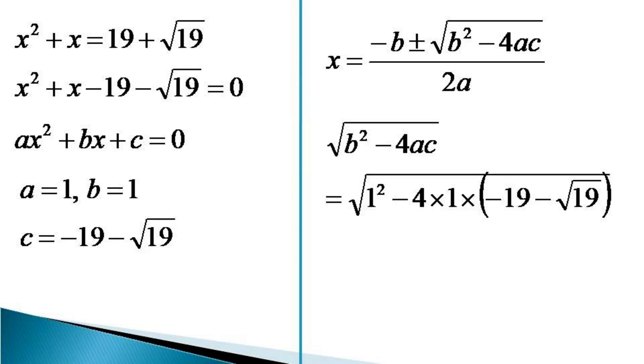√(b² - 4ac) comes as equal to √(1² - 4 × 1 × (-19 - √19)). After putting the values of a, b and c, this simplifies to being equal to √(1 + 4 × (19 + √19)).